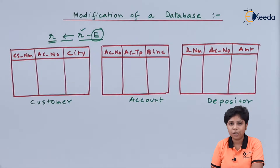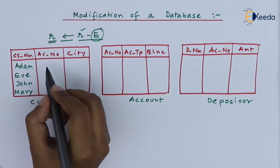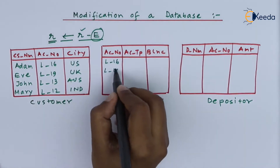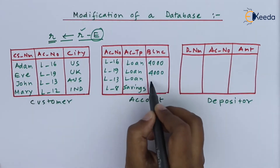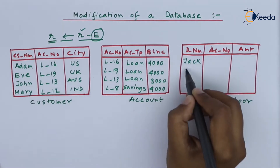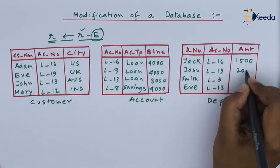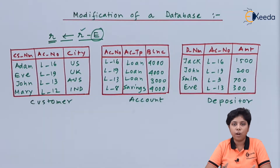Here we are using three relations among which we will perform our modification or updation. We will use the delete operations on these three relations — sometimes using the join of these relations, or sometimes a single relation.